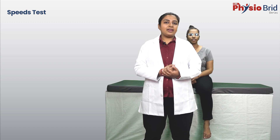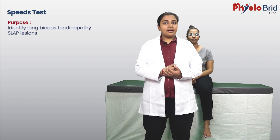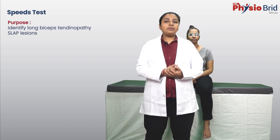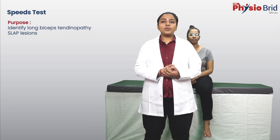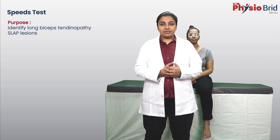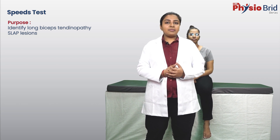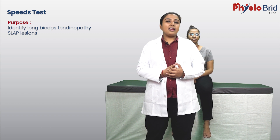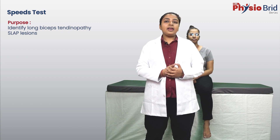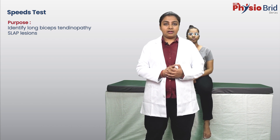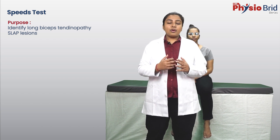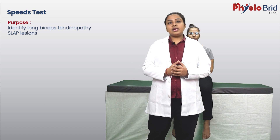The Speed Test is performed to identify biceps tendonitis as well as superior labral anterior posterior lesions, also known as SLAP lesions. This test was primarily designed to identify tenosynovitis of the long biceps tendon.